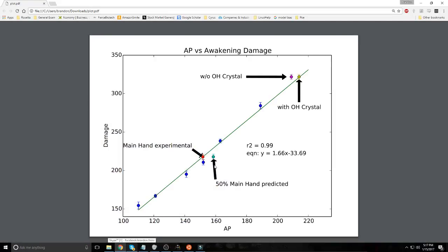If you look, you'll notice that the error bars are quite below the line. So this is probably a statistically significant result. But either way, it's about 50% of the main hand weapon contributing to the awakening weapon damage.